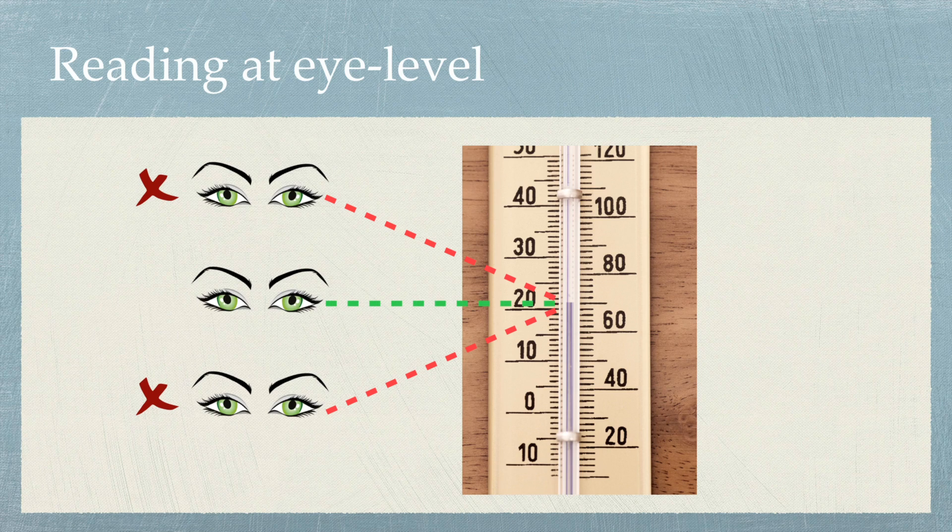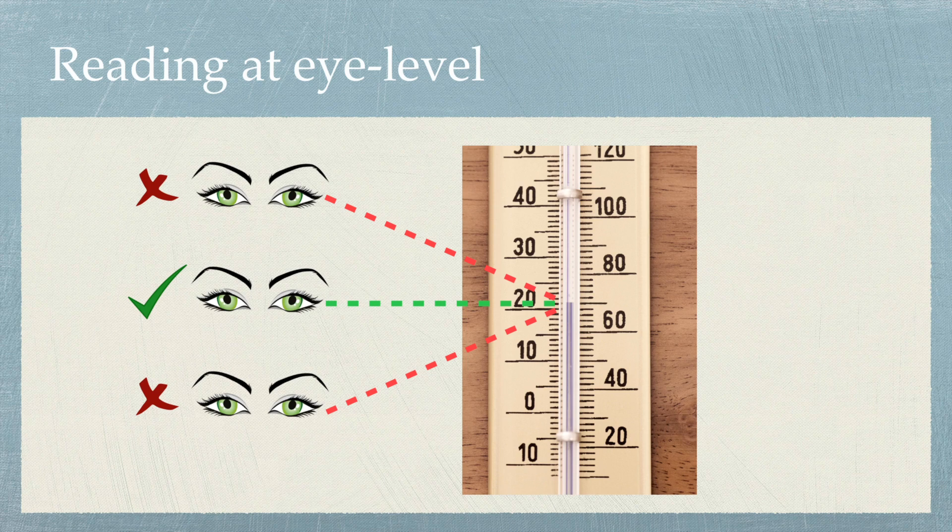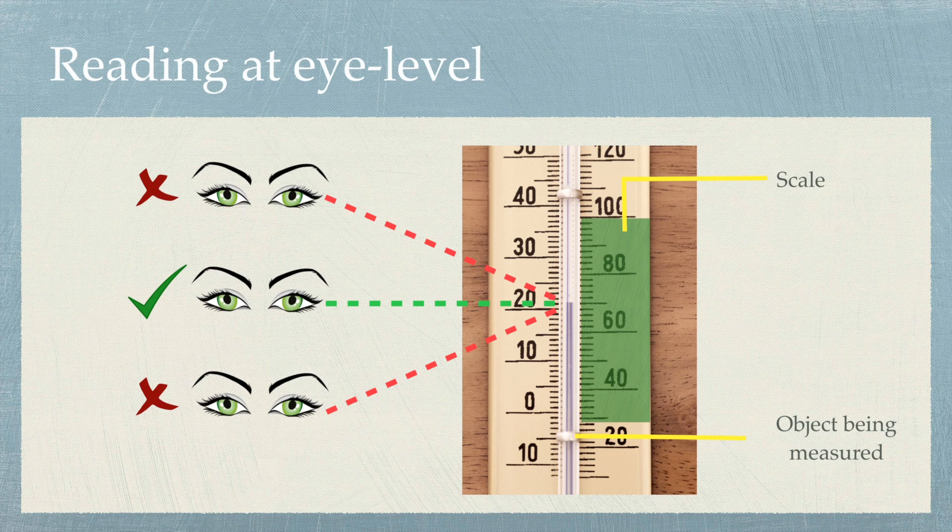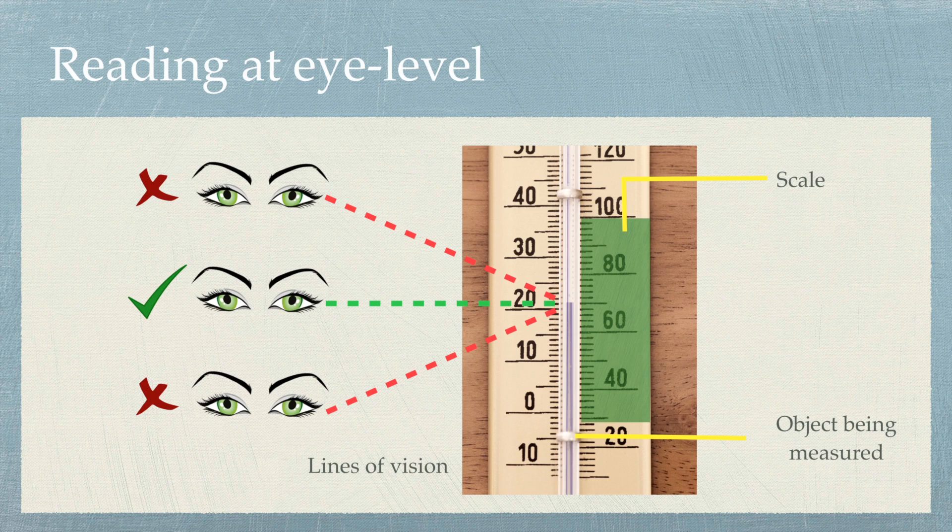This is reading from eye level. If you look closely, the end of the object being measured, and the scale, and the line of vision, are all along a straight line. And the line of vision is perpendicular to the scale and the object.